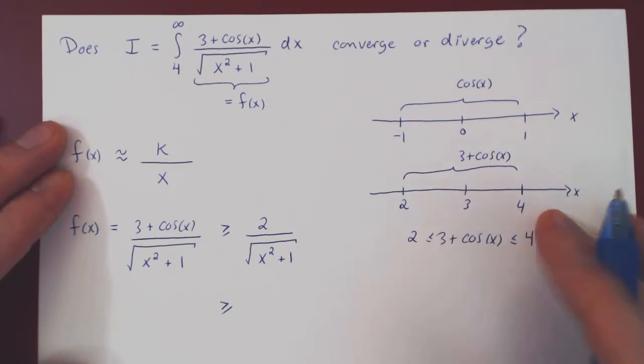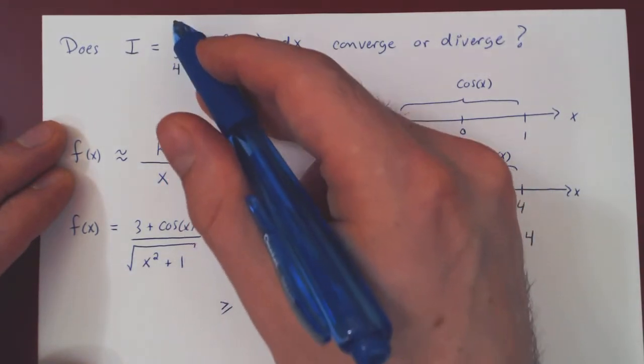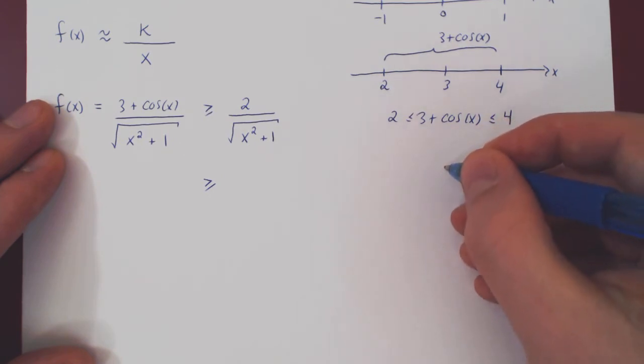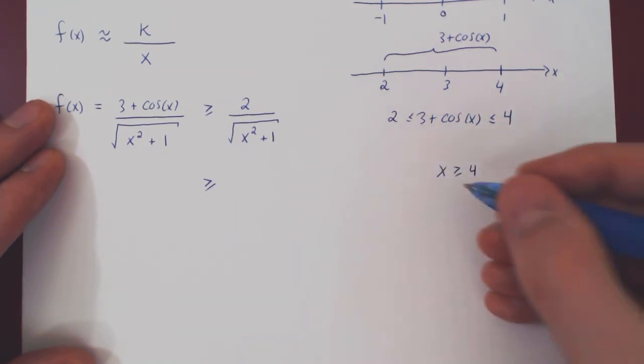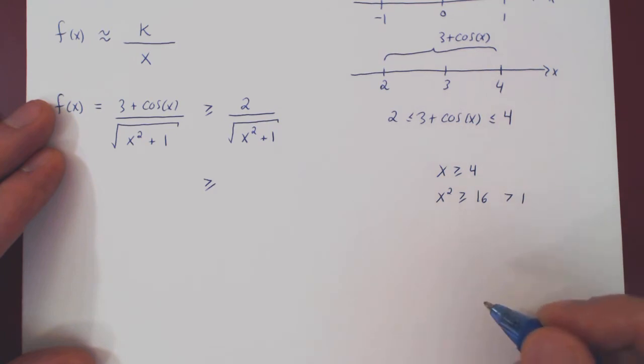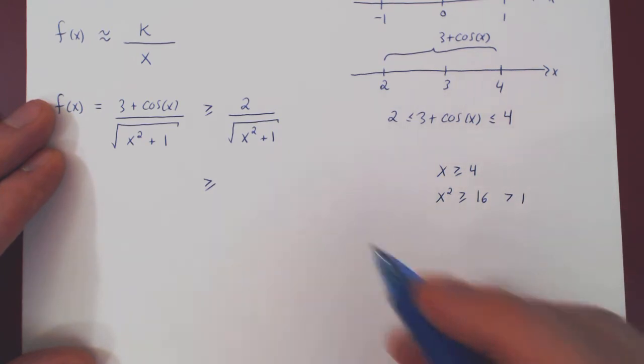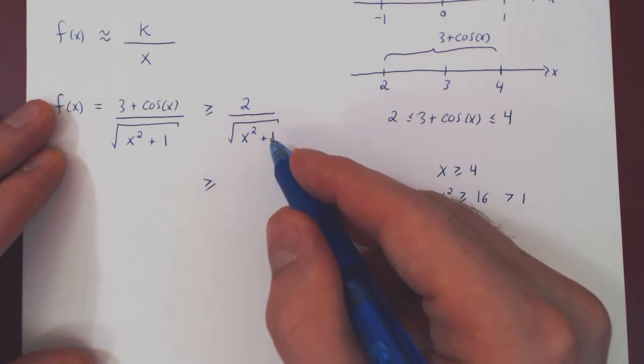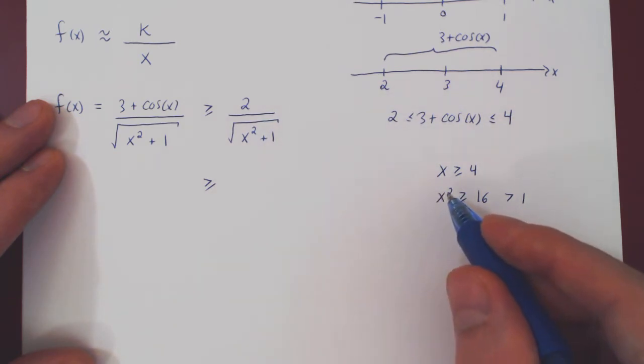Well, if you think about it, our interval goes from 4 to infinity. And so x is at least 4. As x is at least 4, x² is at least 16, which is clearly bigger than 1. So the idea here to give us a very simple integral is simply to replace the 1 by something much bigger, by x².